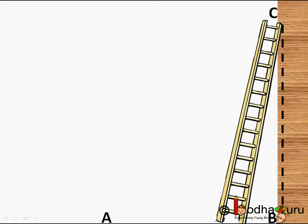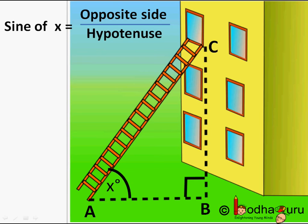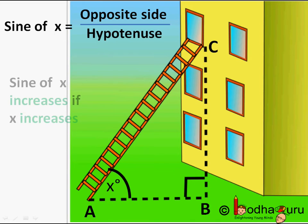Now let us look at this behavior in terms of different trigonometric ratios. Sine of X equals opposite side by hypotenuse. If angle X increases, the measure of opposite side BC is increasing, hence sine of X increases as X increases — the ratio increases as the angle increases.